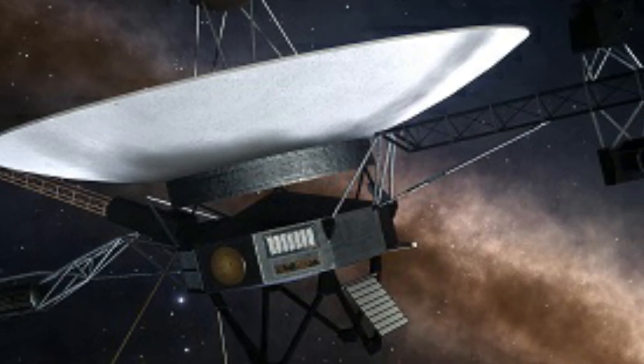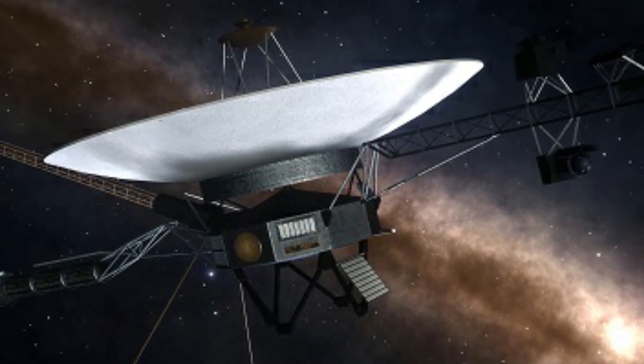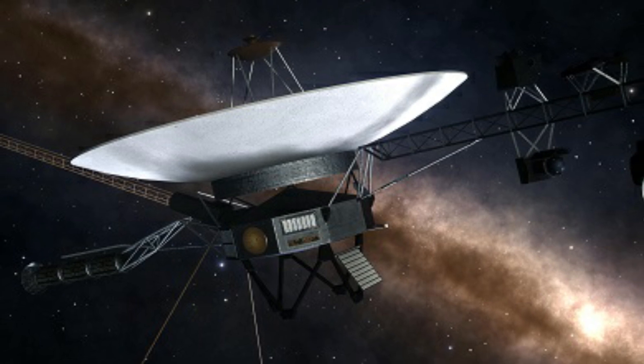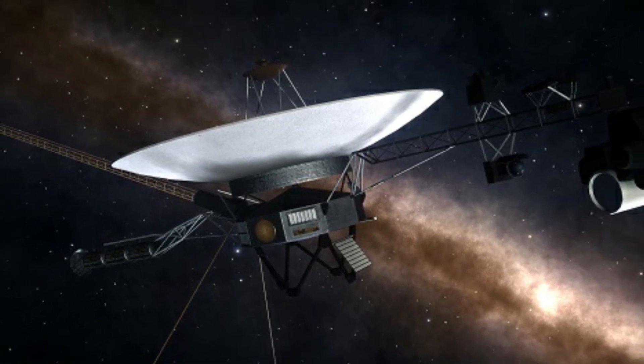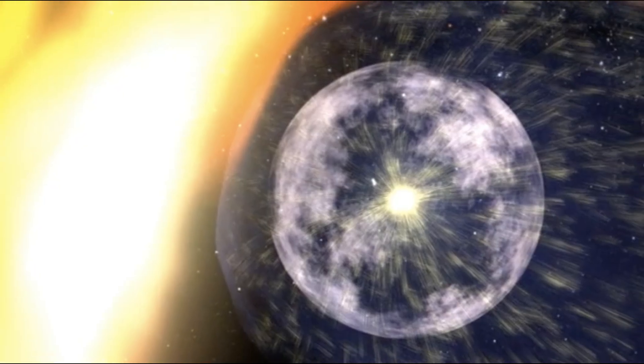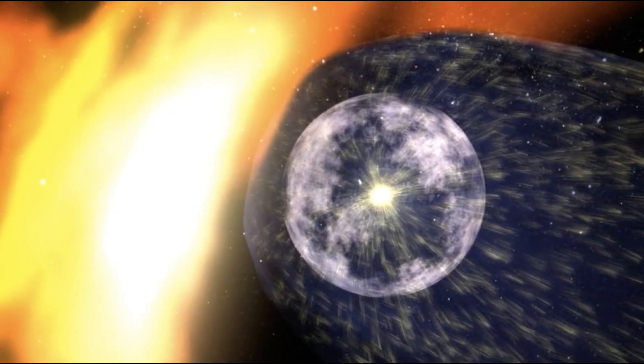Now, nearly half a century later, and over 15 billion miles from Earth, Voyager 1 has encountered one of the most extreme and fascinating phenomena in our solar system's boundary regions, a searing, turbulent zone scientists have dramatically termed the Wall of Fire.